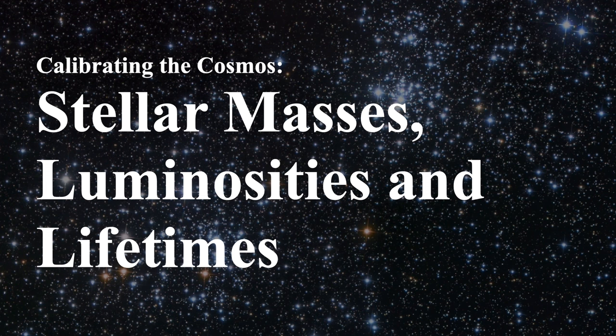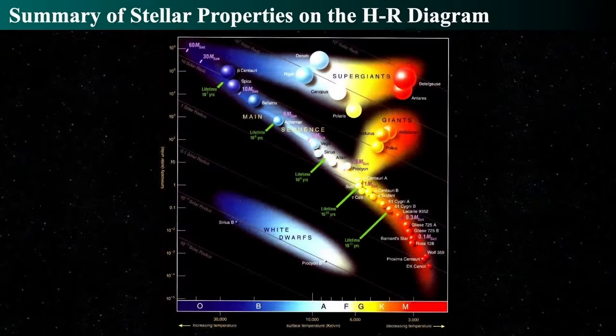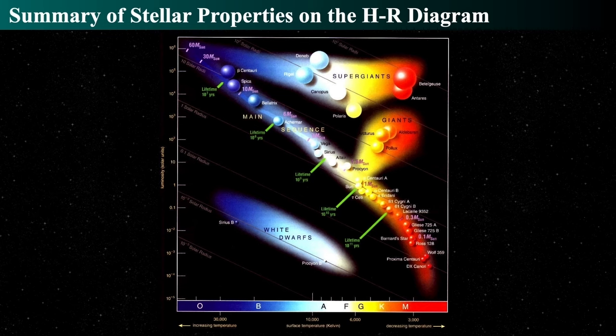The HR diagram is a plot of luminosity up and down versus temperature left and right, with increasing temperature going to the left. Cooler stars are on the right, hotter stars on the left, dimmer stars at the bottom, and brighter stars at the top. By brighter we mean more luminous, not brighter in the sky — that's an important distinction.